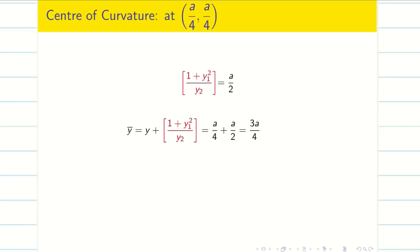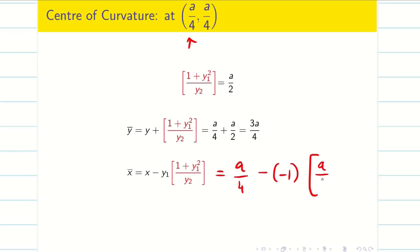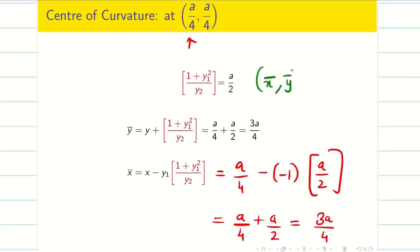Now finding x̄: x̄ = x − y₁ · (1 + y₁²)/y₂ = a/4 − (−1) · (a/2) = a/4 + a/2 = 3a/4. We get the same result. Therefore the center of curvature is (3a/4, 3a/4).